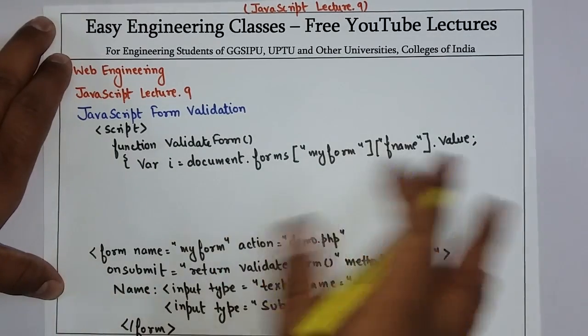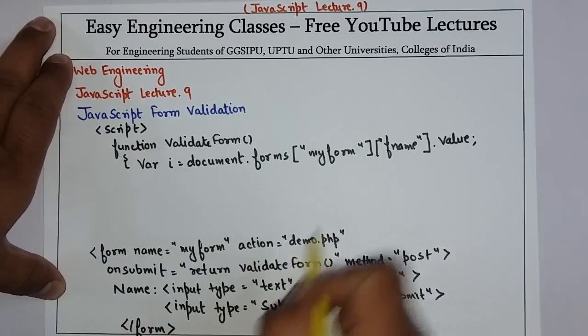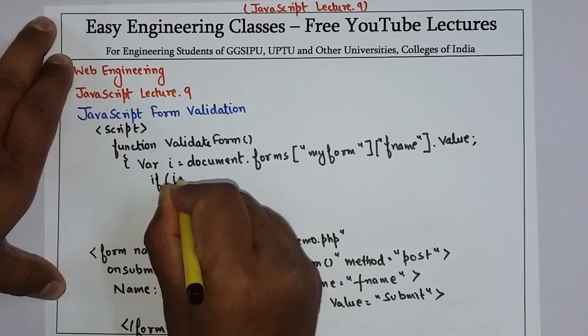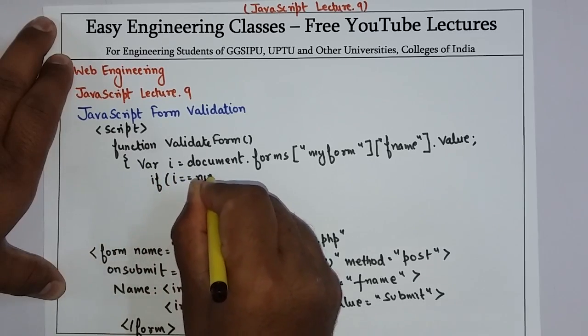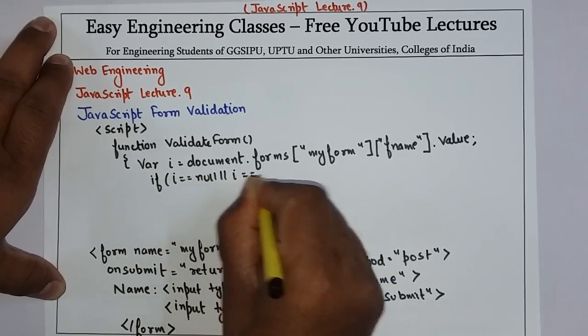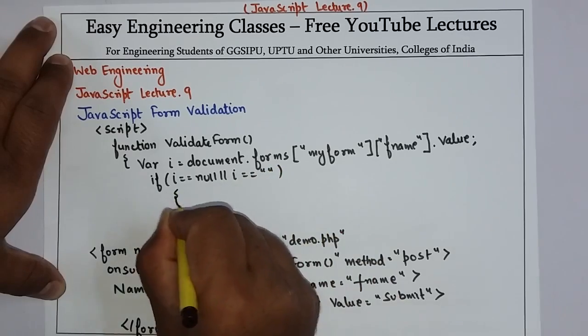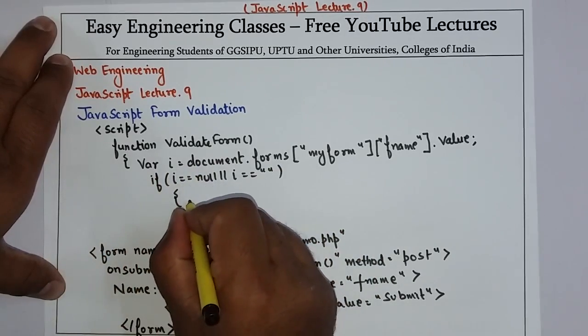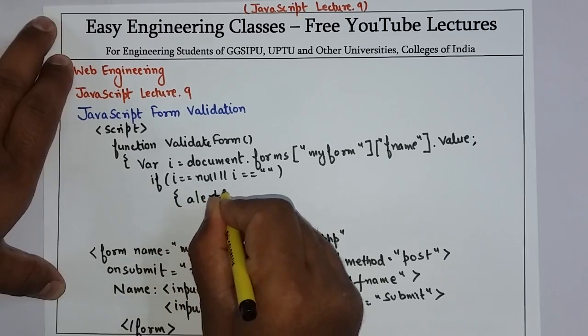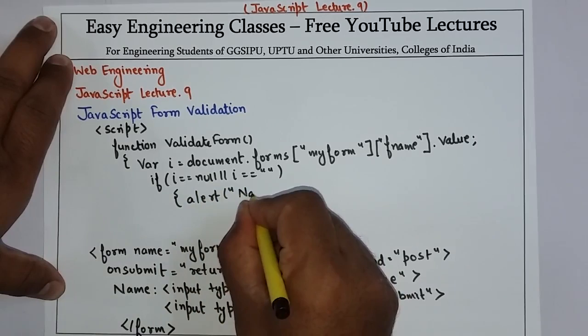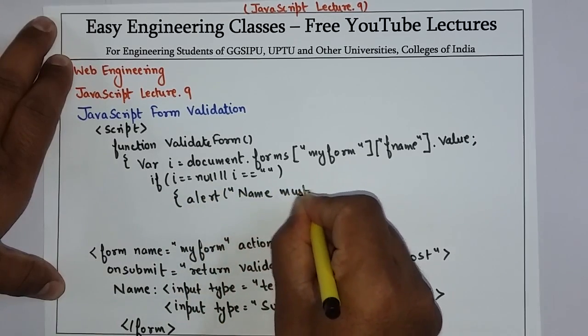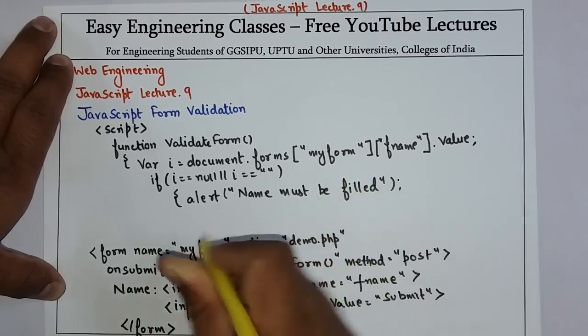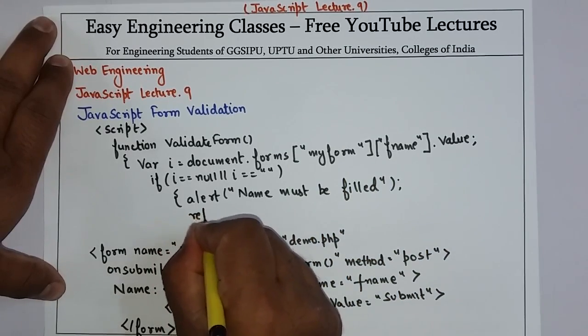And the property of that fname is value, which I need to check. So now whatever I will enter in this text field, that value will come in this 'i'. So now I just have to check if i equals equals to null or i equals equals to blank. If I have not entered anything in this text field, then what I have to do? Simple - raise an alert dialog box and say 'name must be filled', and then you can return false.